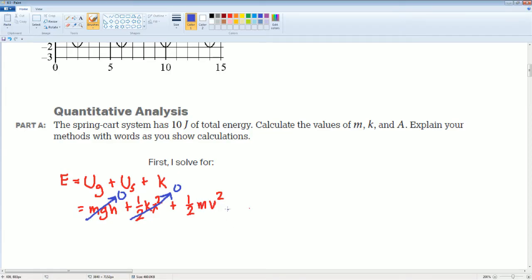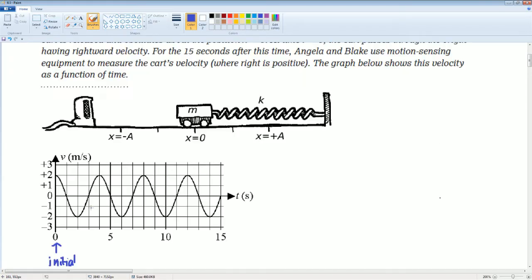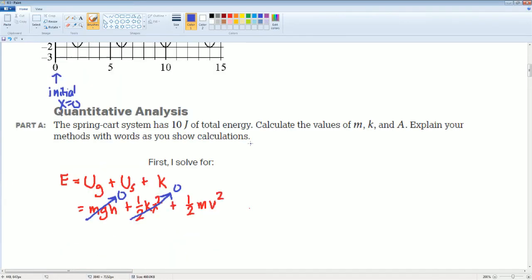So, a couple of things that we can get here. Let's say, get our height. We know our height here. It's not going up or down, so this is going to go to 0. The 1 half K, X squared, is there any spring potential? Nope. It's at equilibrium, so this is going to go to 0. And all we have here is our 1 half MV squared. We need V. We're trying to solve for M, so we need V. We need to get V somehow.